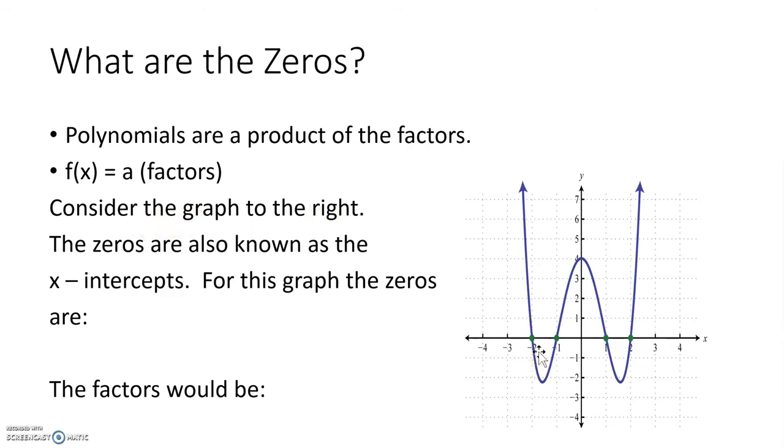Consider this graph – the zeros are also known as the x-intercepts. So for the graph of this function, we need to look and see what our zeros are. So we have a zero here, here, here, and here. So our four zeros are negative 2, negative 1, 1, and 2.